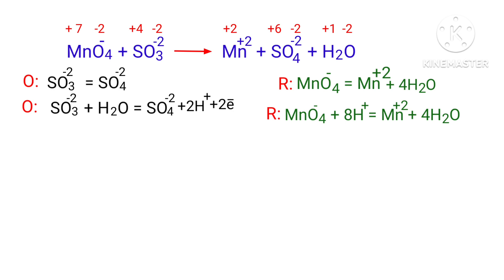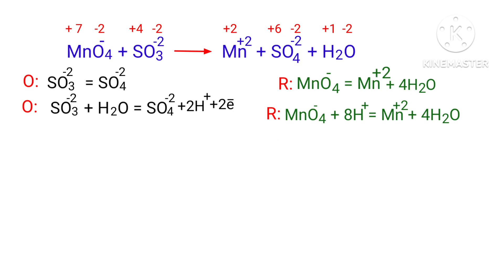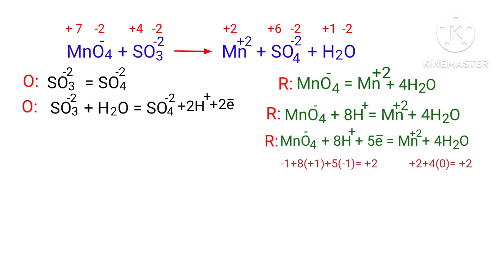Now balance the charges in the reduction half-reaction. Both sides are not equal, so add 5 electrons to the left side to make it equal to +2. The charges in the reduction half-reaction are now balanced.